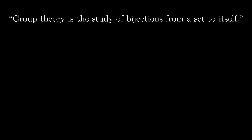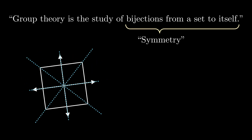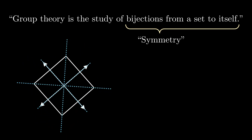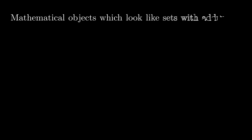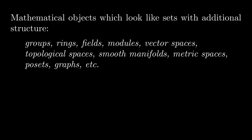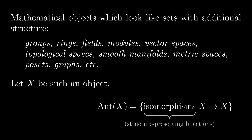Since we now know that all groups are permutation groups, it would be reasonable to say that group theory is the study of bijections from a set to itself. A common way to express this idea is to say that group theory is the study of symmetry. For example, the symmetries of a square — consisting of flips and rotations that take the square to itself — form a group called D8. Each of these symmetries is a bijection from R² to itself. We're not limited to symmetries of geometric shapes. In mathematics, the objects we're interested in often look like sets equipped with some additional structure. An isomorphism from such an object to itself is called an automorphism, and the group of all automorphisms of an object can tell us a lot about the object itself — a major reason why groups are so important in mathematics.